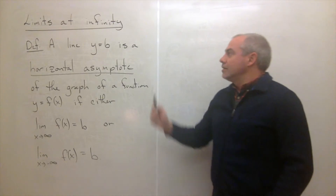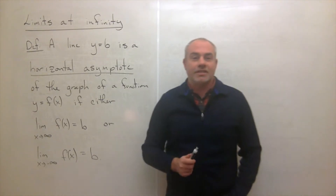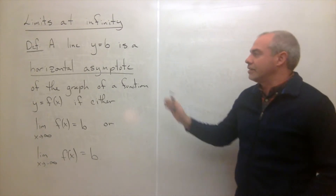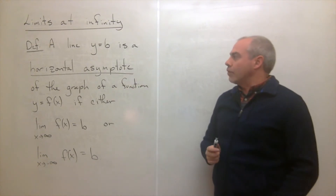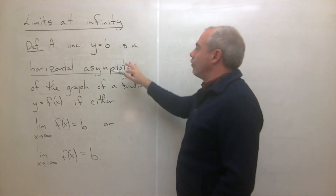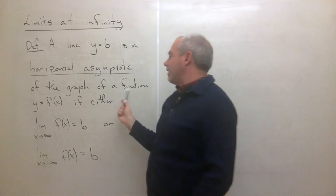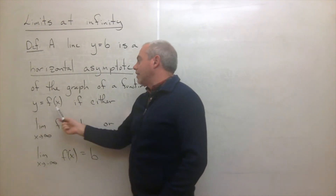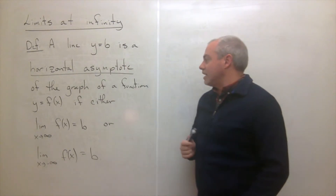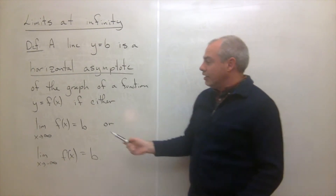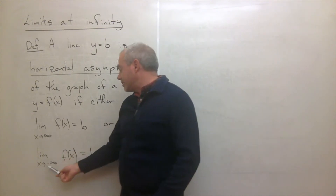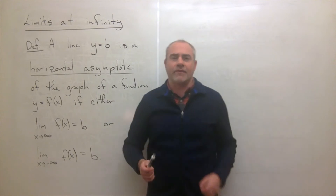Welcome back. Today I want to talk to you about limits at infinity. Let's start with a definition and understand what a horizontal asymptote is first. We're going to define a horizontal asymptote of a graph of a function y equals f of x to exist and be equal to y equals b if either the limit as x goes to infinity of f of x is b, or the limit as x goes to negative infinity of f of x is b.